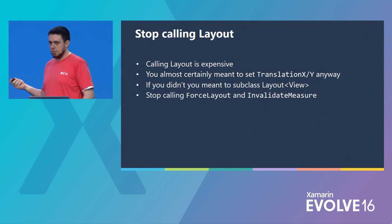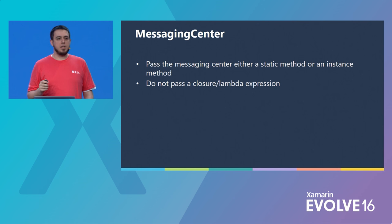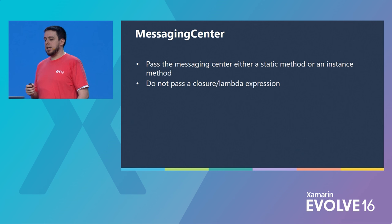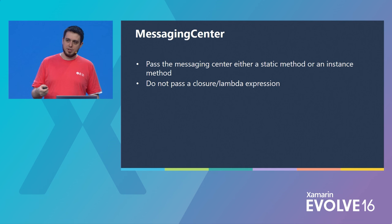When you use the messaging center, if you can, use something like Prism — Brian Lagunas did a great talk on it. But if you're just going to use the messaging center for message passing, please pass it either a static or an instance method. Whatever you do, don't pass it a lambda expression, especially if that lambda generates a closure — you'll almost certainly leak that memory.